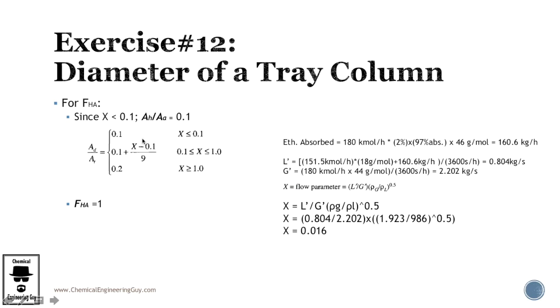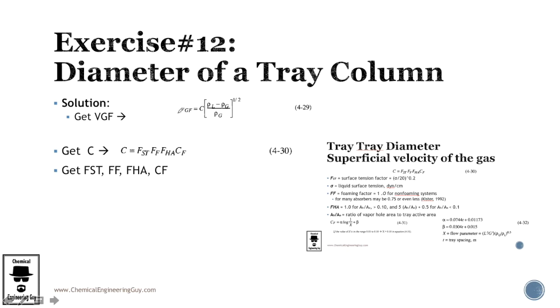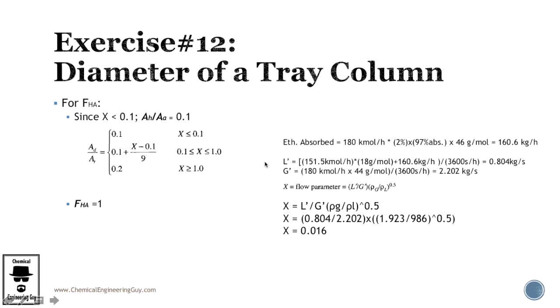And then, let me see what we have here, we gotta calculate the total X value, and remember that the X value is not the same as this one right here, which is BGF, kind of similar, but they are not the same. Remember that X is defined as the flow parameter, which is the liquid flow rate over gas flow rate, times the density ratios to the 0.5 power.